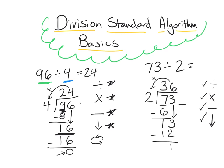Unlike the last problem where we had a 0 left over — meaning it divided equally — 73 divided by 2 does not divide equally. We have 1 left and we can't make another group of 2 with just 1, so that is going to be a remainder. We write our remainder next to our quotient up top, giving us an answer of 36 with a remainder of 1.